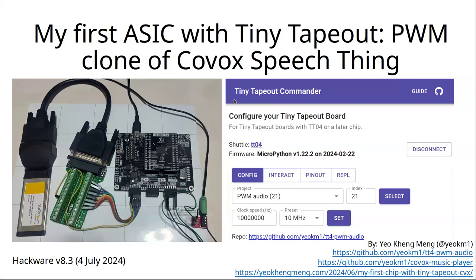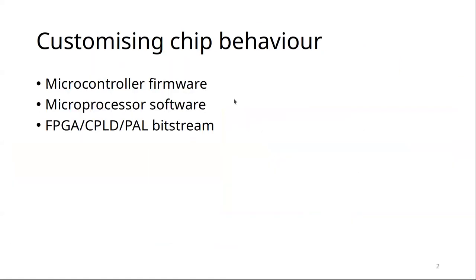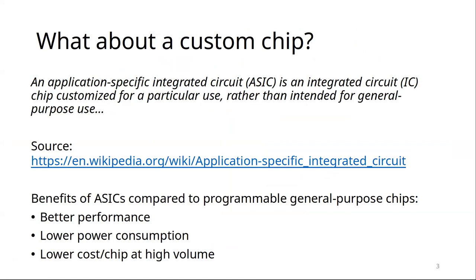When it comes to customizing the behavior of a chip, these are the typical three options: write microcontroller firmware, write software that runs on a microprocessor, or use an FPGA. Most of us don't think of another option — a custom chip.